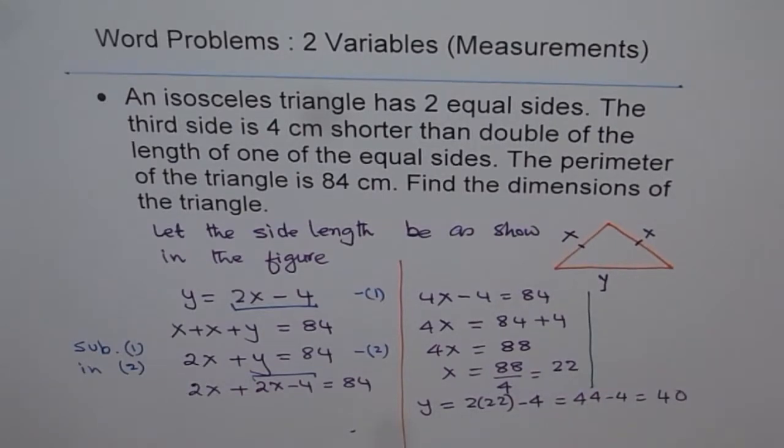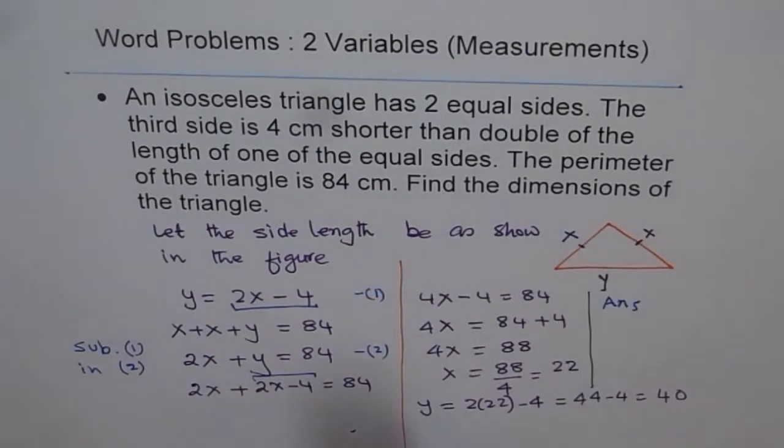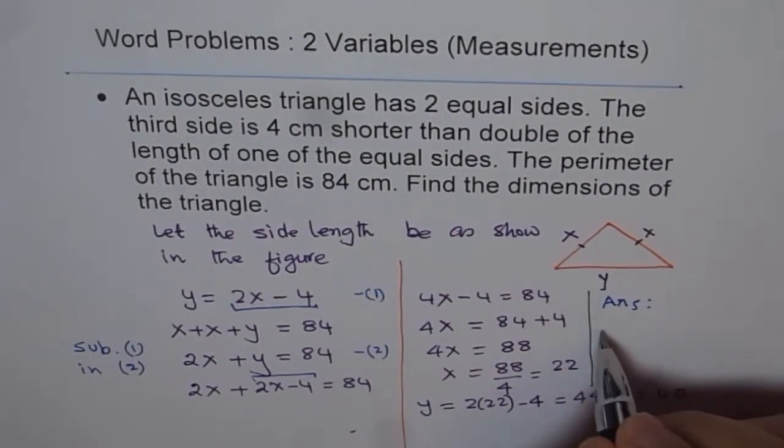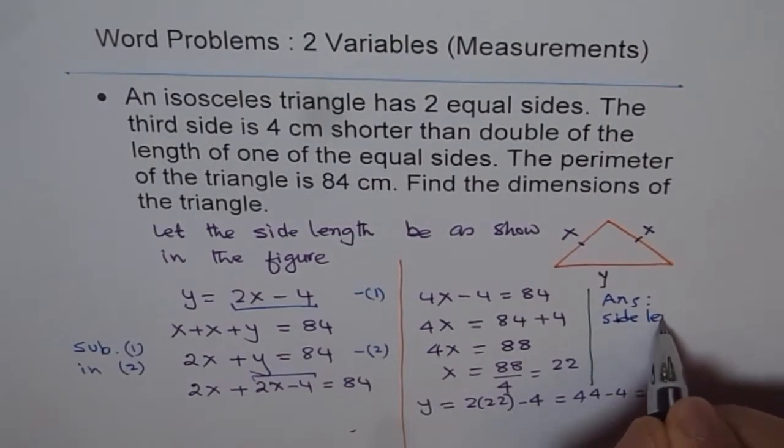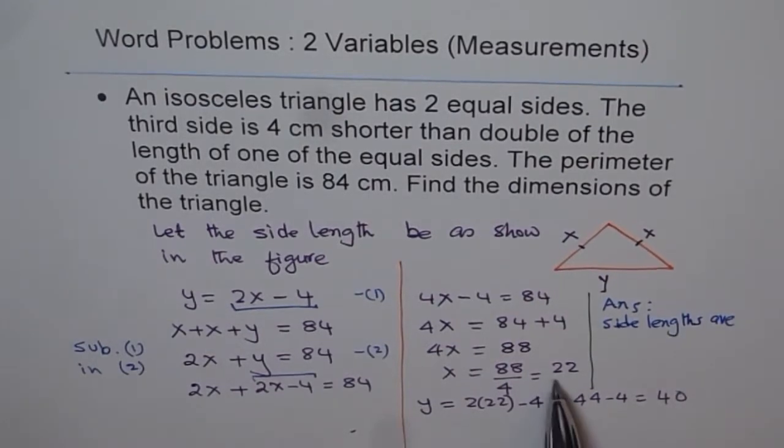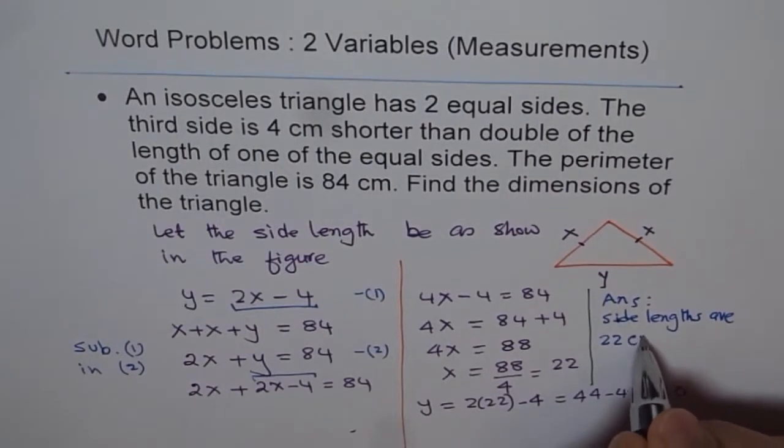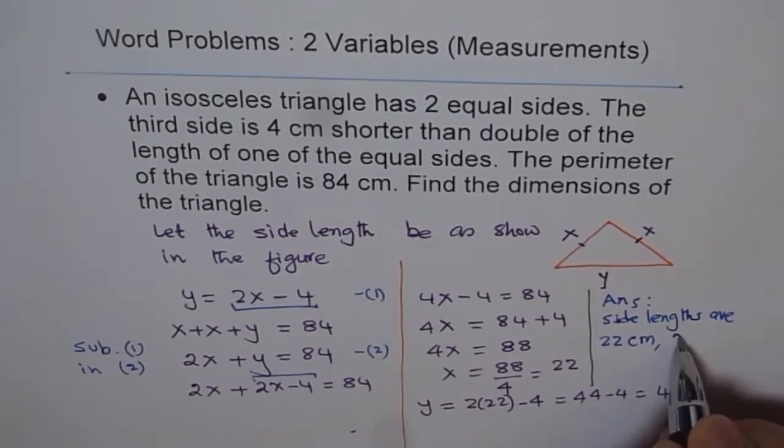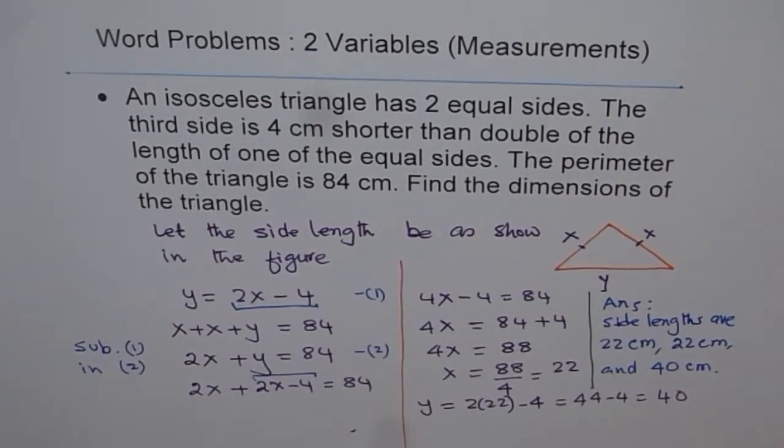The answer is: find the dimensions of the triangle. The dimensions are the side lengths. The x value is 22. The unit is centimeter since perimeter is given in centimeters. So the side lengths are 22 centimeters, 22 centimeters, and 40 centimeters.